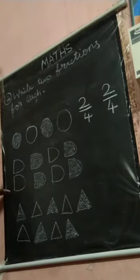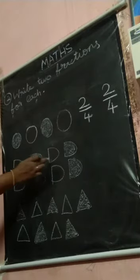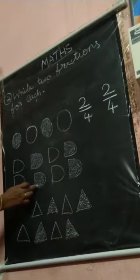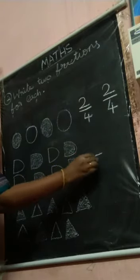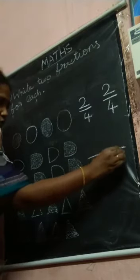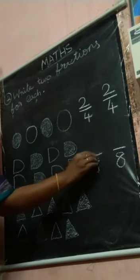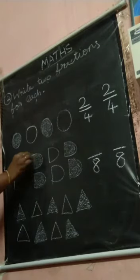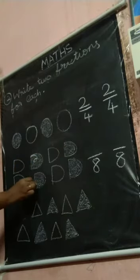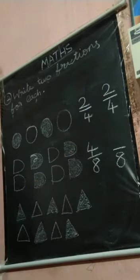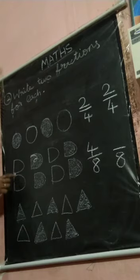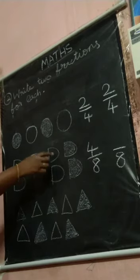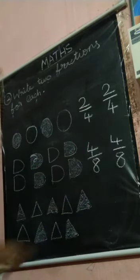The same way, do the second question also. First, how many objects are there? Count and write: 1, 2, 3, 4, 5, 6, 7, 8. Now write 2 fractions. First count and write the shaded objects: 1, 2, 3, 4. How many objects are shaded? 4 objects are shaded. The remaining not shaded objects: 1, 2, 3, 4 — that is also 4 by 8.